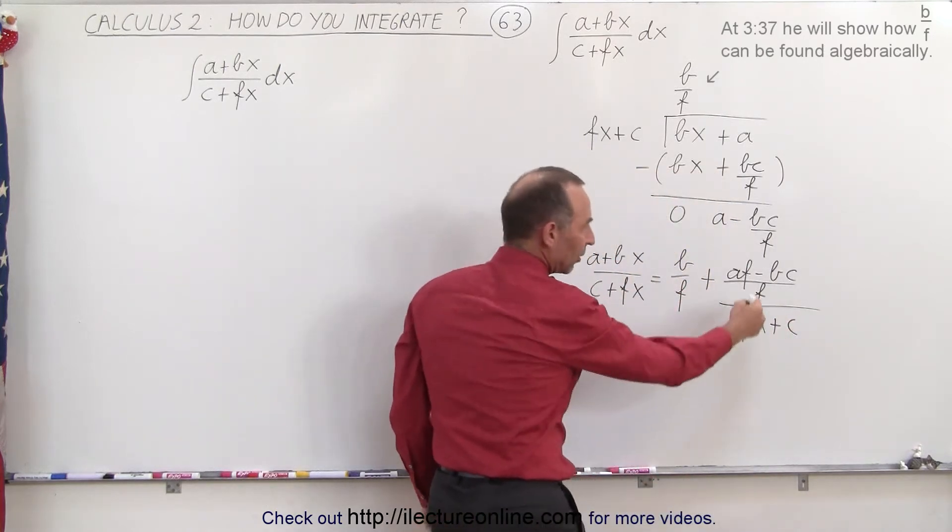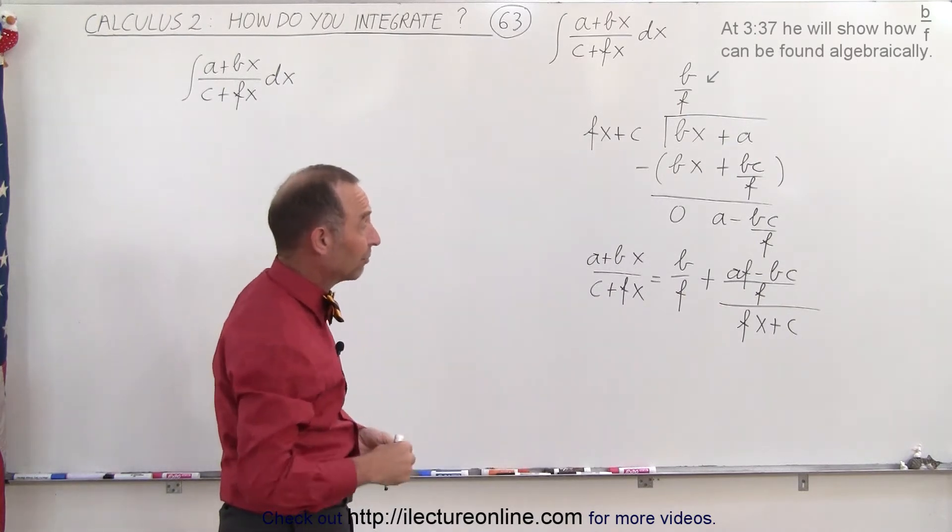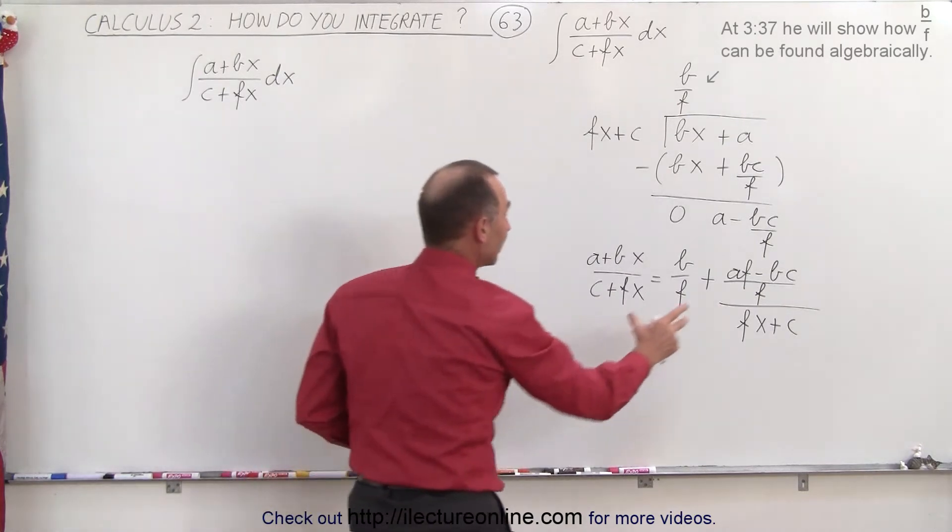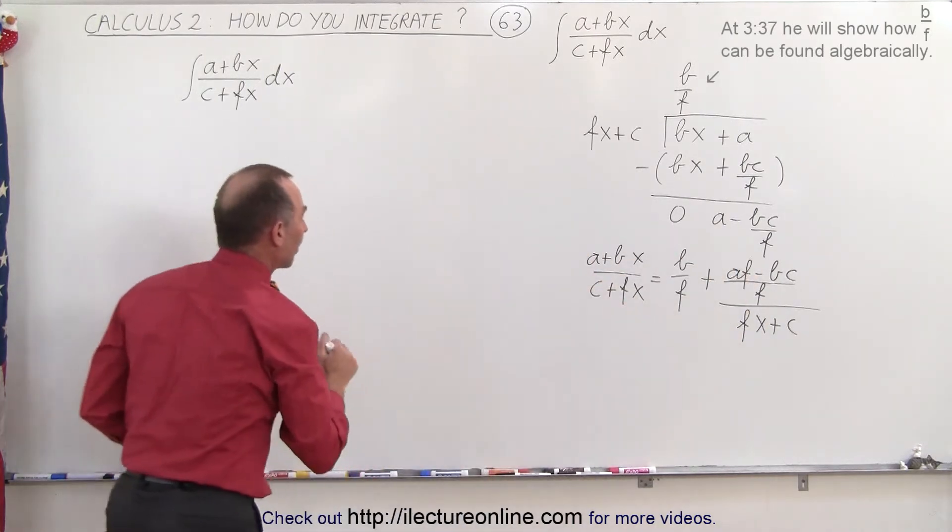Now, this doesn't look too bad because all of this in the numerator is a constant, so whenever we're dealing with constant integrals, that makes it fairly easy. So let's go ahead now and rewrite this integral in terms of the sum of those two and see what we get.